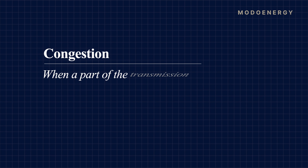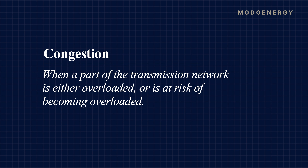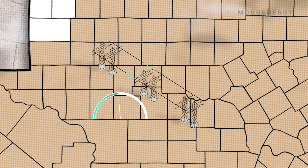Congestion is when a part of the transmission network is either overloaded or is at risk of becoming overloaded. Basically, it happens when there's more power being transferred between two areas than the transmission infrastructure can actually handle.